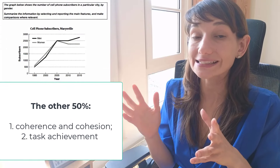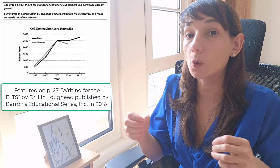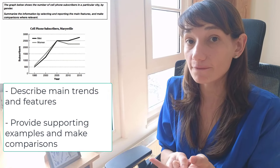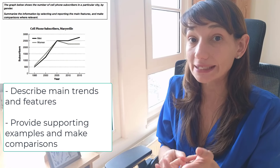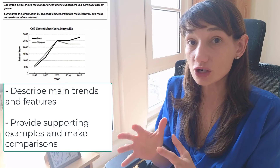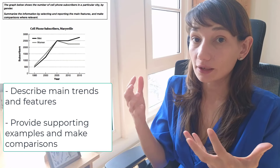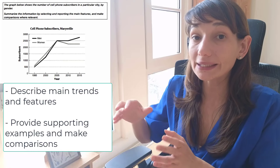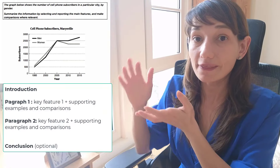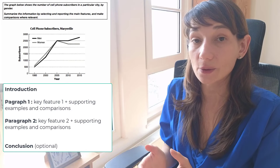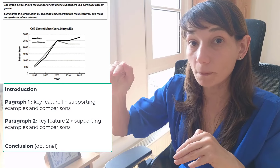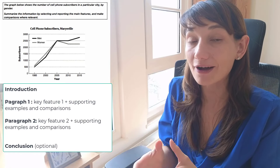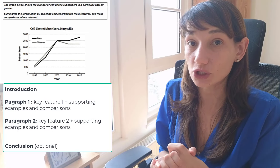Here we have a line graph — this is Task 1. Task 1 always requires you to describe main trends and to provide support for those main trends, meaning you need to provide examples. The structure of your writing is not defined by examiners, but it should be logical: there should be an introduction, at least two body paragraphs, and each body paragraph needs to have a topic sentence and supporting ideas. Let's see how to do it for a line graph description.